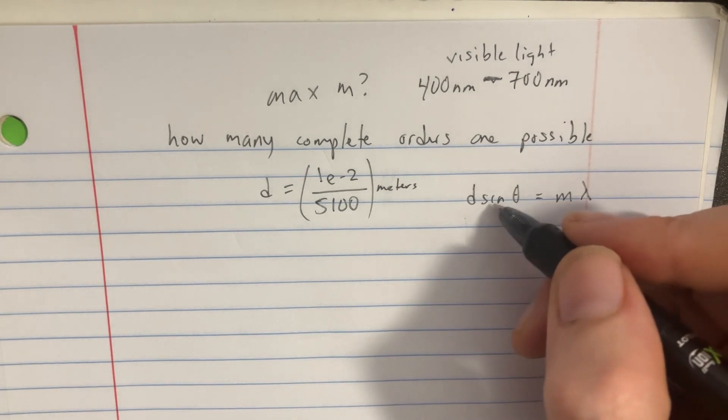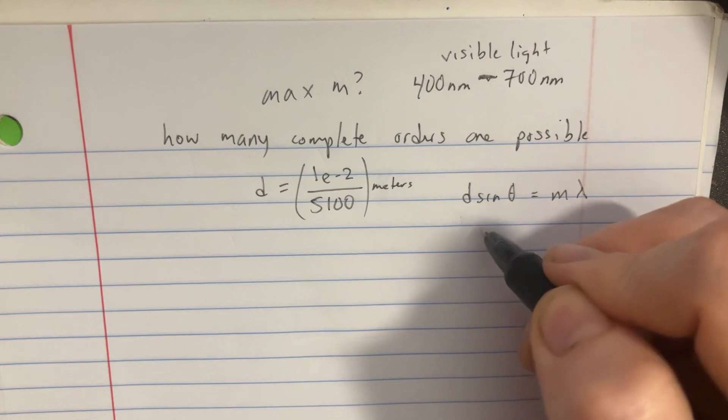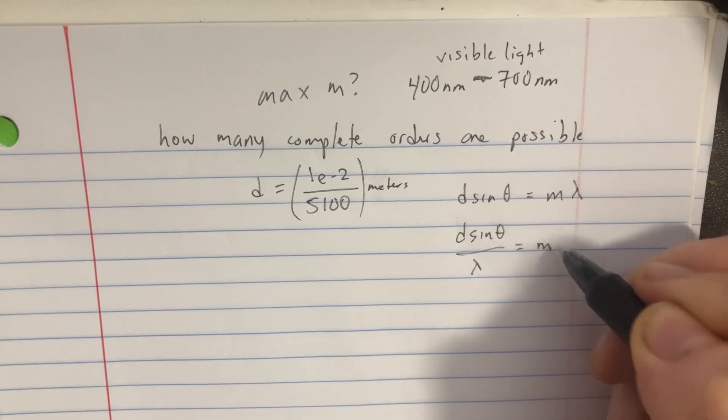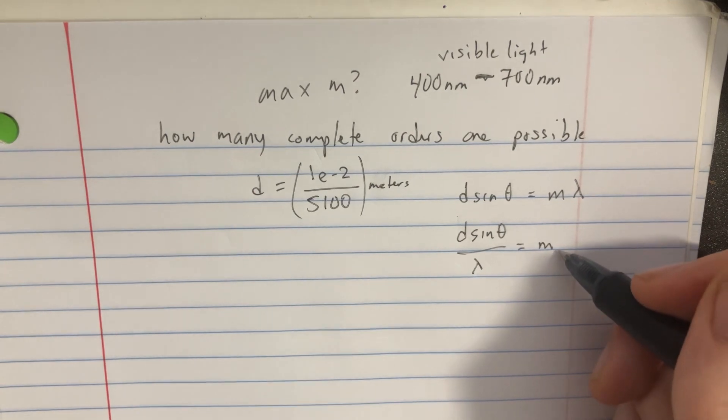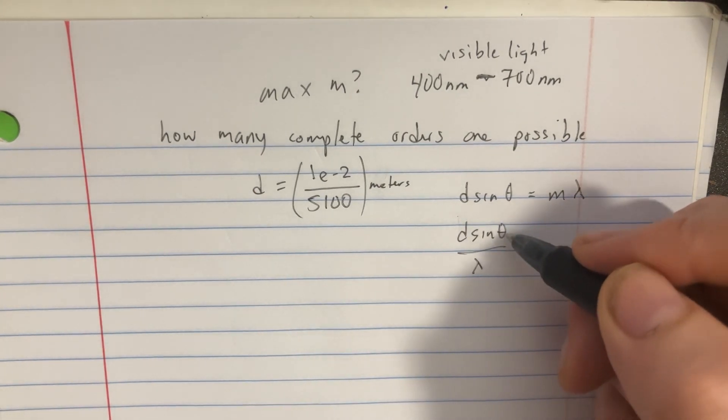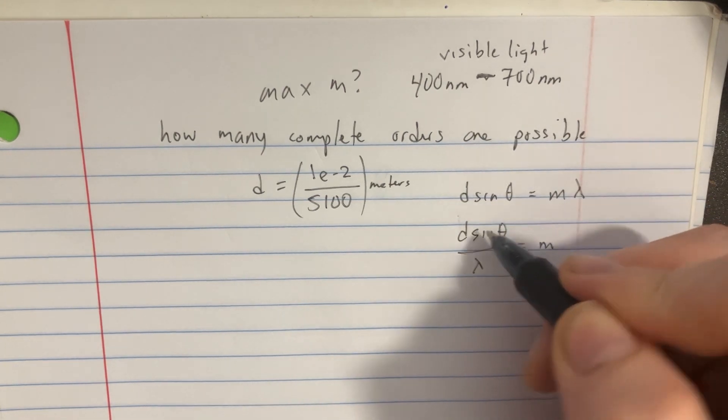And you could try doing a hard derivative here by basically taking d sine theta divided by this lambda equal to this M here. And you could take the derivative of M with respect to theta and then set that equal to zero.